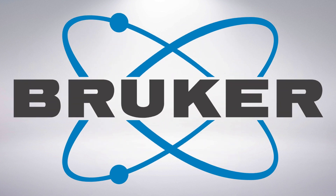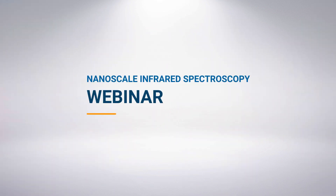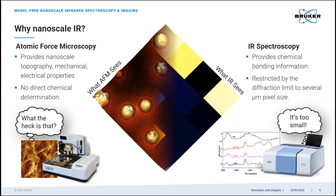The motivation for AFM-IR stems from some of the shortcomings of atomic force microscopy and infrared spectroscopy. With AFM, you can access nanoscale structure and interesting properties of materials, achieved by a sharp tip of a cantilever that's scanning your sample surface with very fine position control. But the ability to determine chemical identification or distribution is lacking.